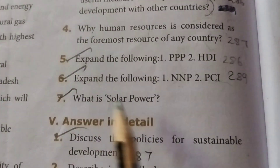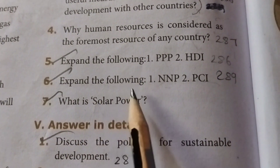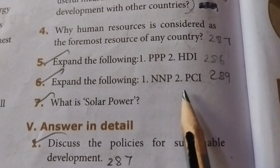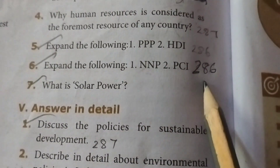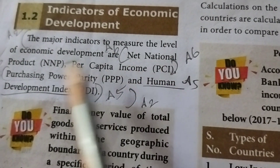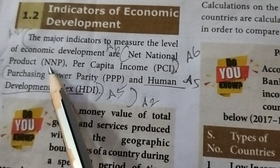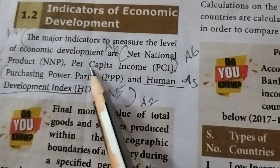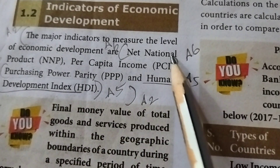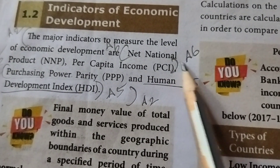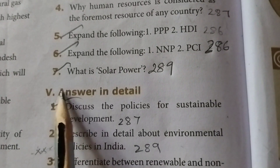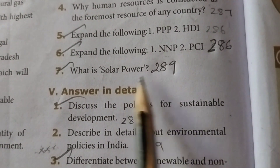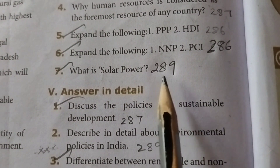Sixth question: expand the following — NNP and PCI. (Page number 286.) NNP stands for Net National Product. PCI stands for Per Capita Income. Seventh question: what is solar power? (Page number 289.)